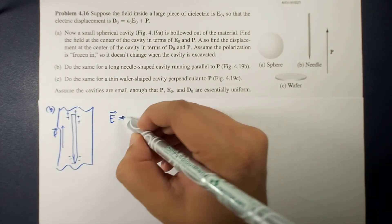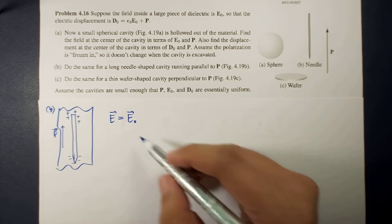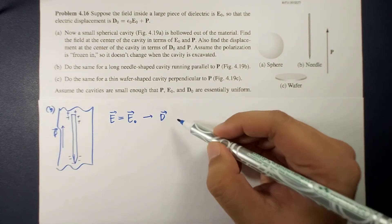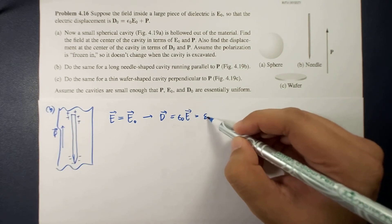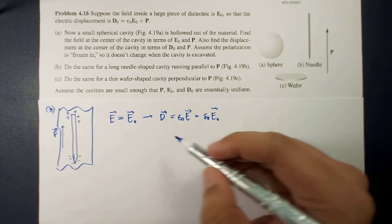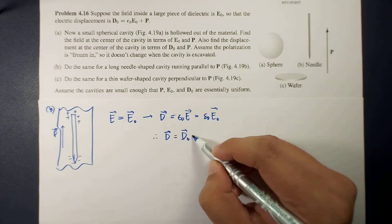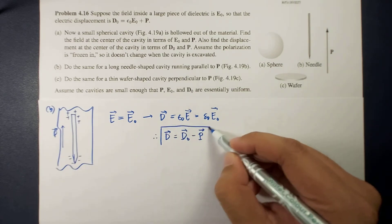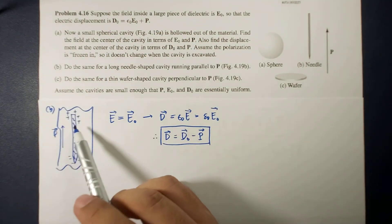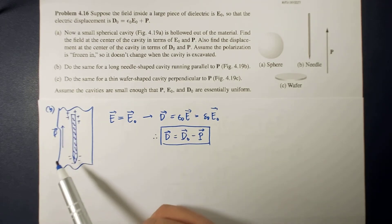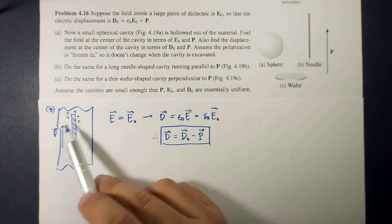Therefore, the electric field inside the needle-shaped cavity is approximately equal to the electric field of the dielectric material E0. The electric displacement, which equals epsilon_0 times E, equals epsilon_0 E0, so the displacement for this configuration equals D0 minus P. The electric field inside this cavity remains equal to the electric field inside the dielectric material.